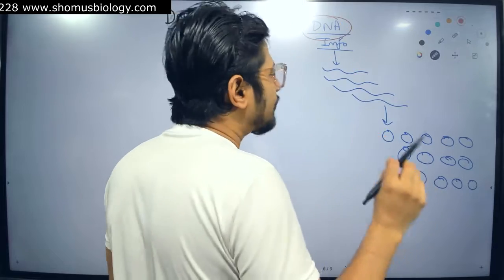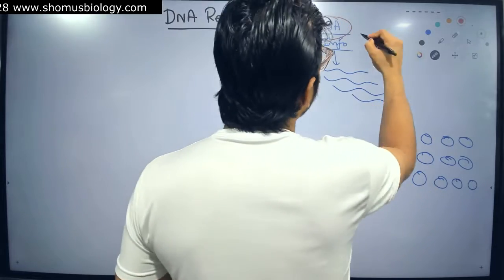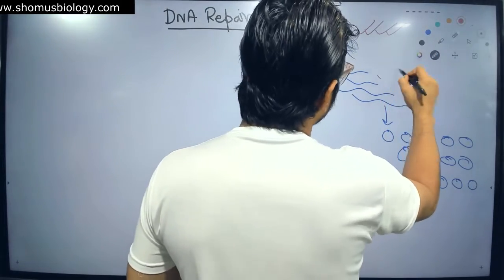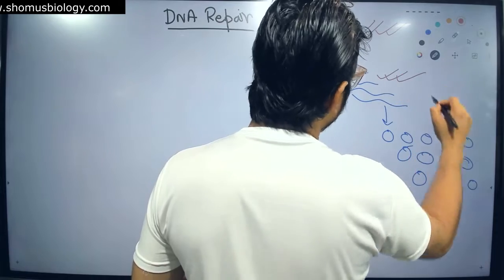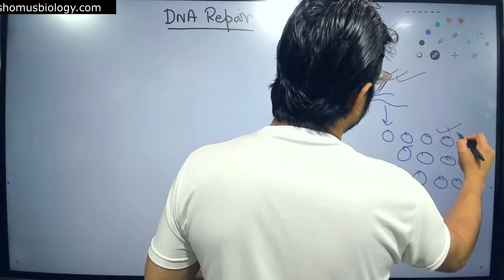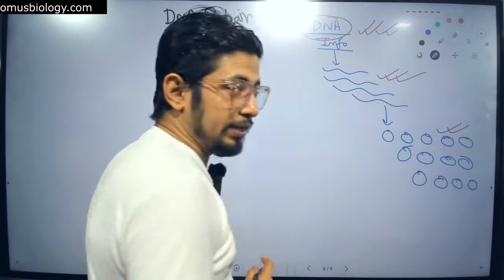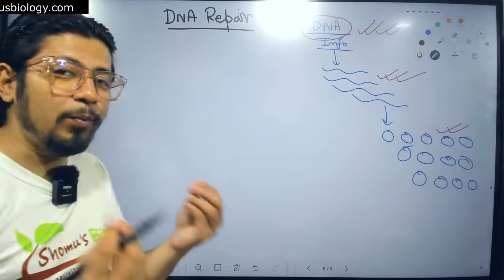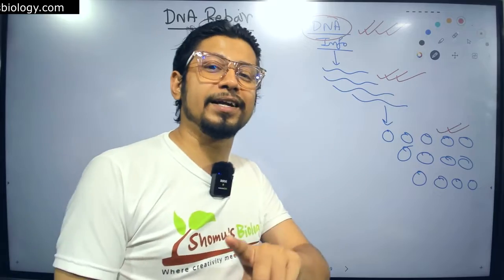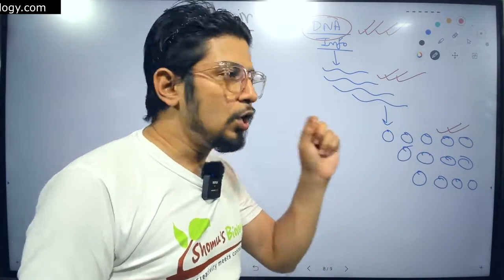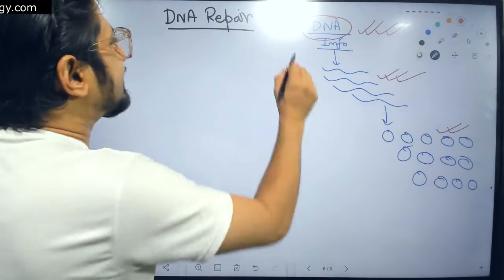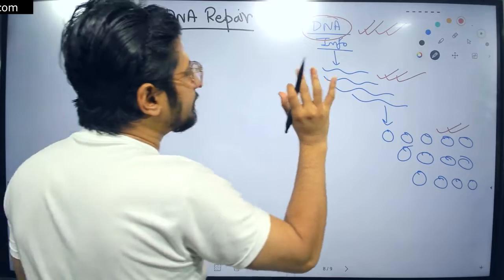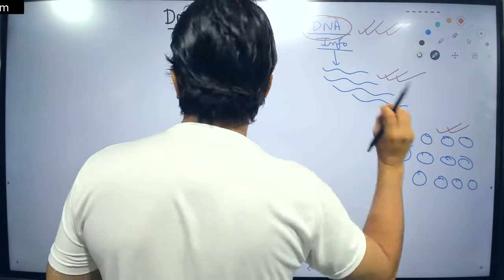A cell will score more points if they fix the error in DNA than if they fix it in RNA, or if they fix it in protein. You will earn more points if you fix the error at the DNA phase. That's why DNA errors are always seriously talked about.